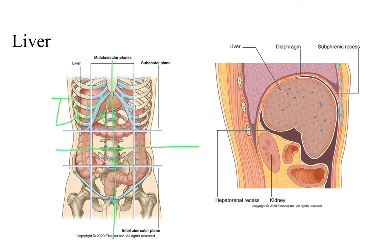Notice also that most of it is under the ribcage, so if you're trying to palpate for the liver you'd have to put your hands underneath the ribcage to be able to feel it. You could also feel it here, but consider that you also have other organs such as the stomach sitting there which might interfere with your ability to palpate the liver. In physical exam lab you'll learn techniques on how to palpate the liver and see whether it's enlarged or causing pain.